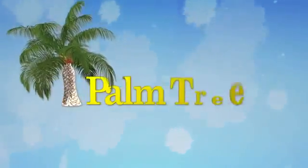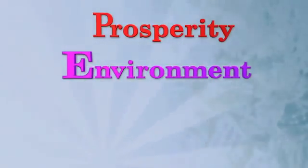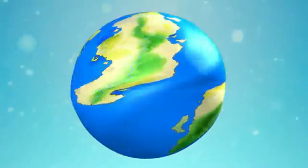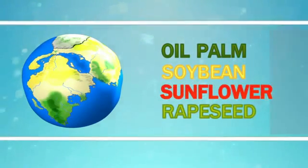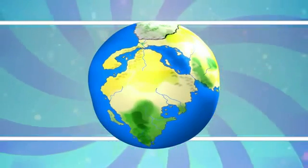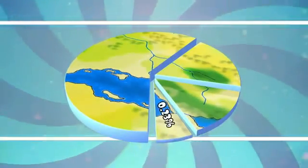This is an oil palm tree. It brings prosperity to people and it is great for the environment. Our world has four major oil crops: oil palm, soybean, sunflower, and rapeseed. They occupy 3.55% of the world's total agricultural land. Interestingly, oil palm occupies only 0.23% of the world's total agricultural land.